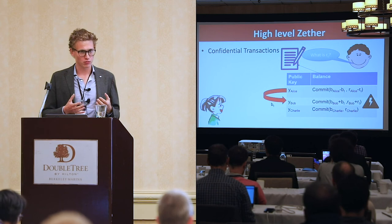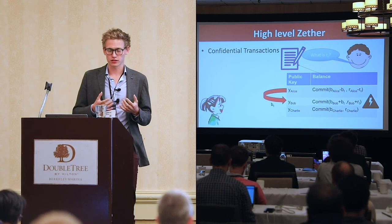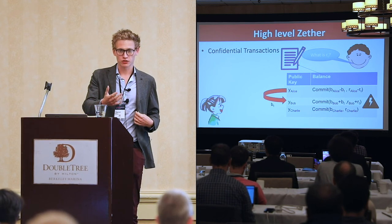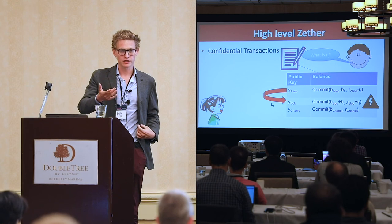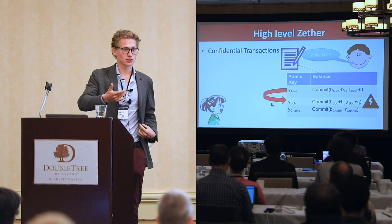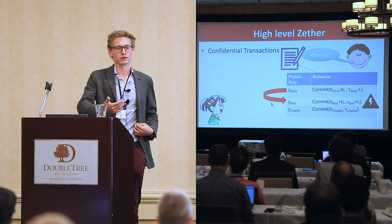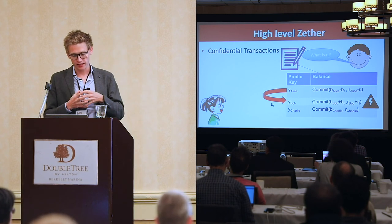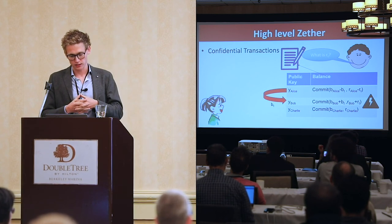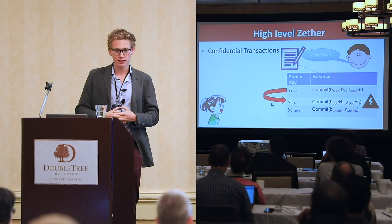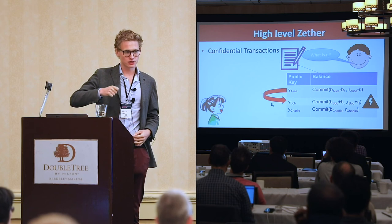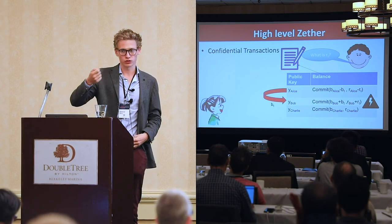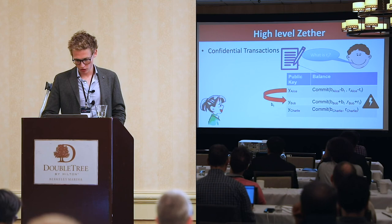Why is this a problem in the account model but not in the UTXO model? In the UTXO model, if someone sends you a transaction you cannot spend, you simply ignore it. However, if the state gets compressed in these accounts, this new randomness affects all of your old state.